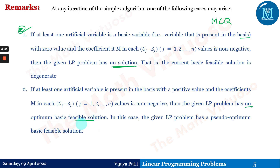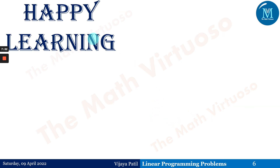In this case, the given LP problem has a pseudo-optimal basic feasible solution. Whenever an artificial variable is present when the algorithm terminates, we will not have a true optimum or basic feasible solution; such a solution is known as a zero or pseudo-optimal basic feasible solution. This is all about the Big M method, and we will be discussing it in further detail with the help of examples. Thank you so much, happy learning.